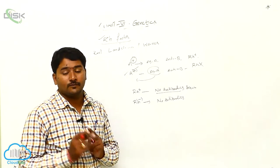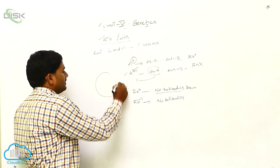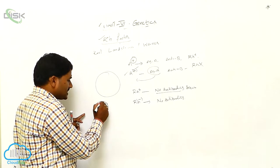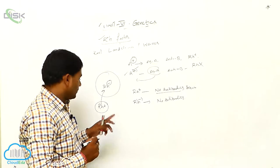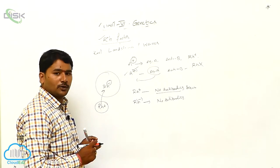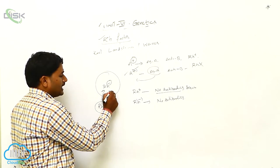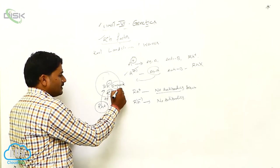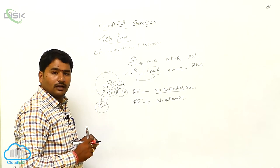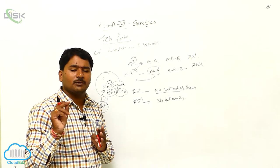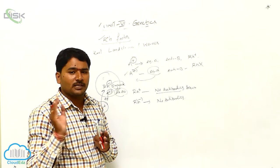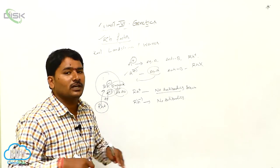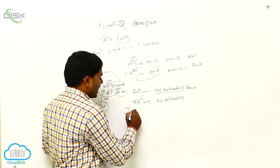When can you see RH antibodies? When RH positive blood is injected into an RH negative individual, the RH antigens enter the negative blood group body. The negative individual's immune system will be sensitized and will produce RH antibodies against the RH antigen. Only then are RH antibodies present.